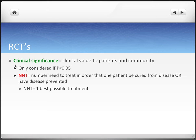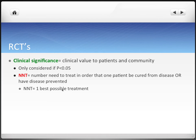If the test result is statistically significant, we can then consider whether or not it's clinically significant — considering the clinical value of the treatment to patients and the community. We can measure this with NNT, which is the number of patients needed to treat in order that one patient be cured from disease, or, if measuring a preventative treatment, have the disease prevented. With NNT, 1 is the best possible treatment — meaning you treat one person and one person is treated. The lower the number, the better when comparing two treatments.